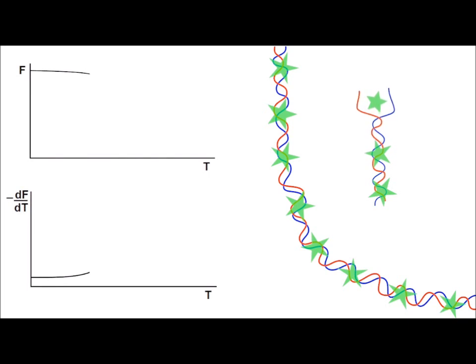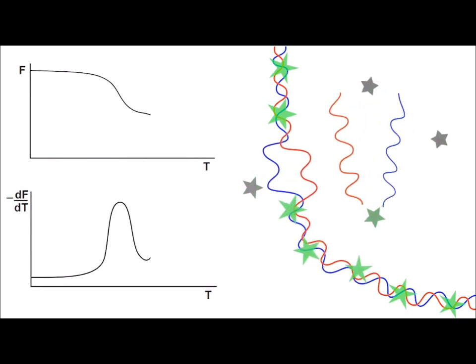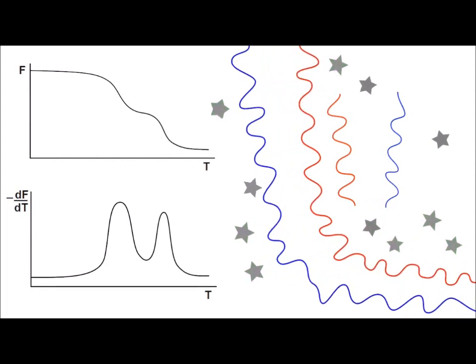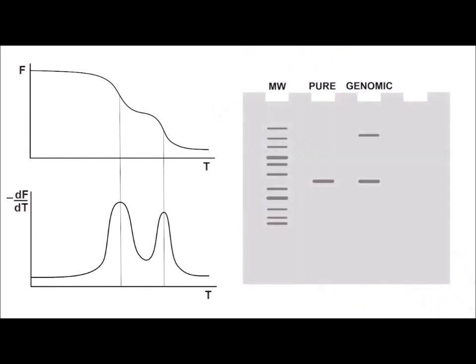Denaturation of the genomic DNA occurs after the melting temperature of the target due to the large size of the genomic DNA, hence producing a second, later peak in the melt curve. This contamination results in a slow band in the gel corresponding to the genomic DNA.